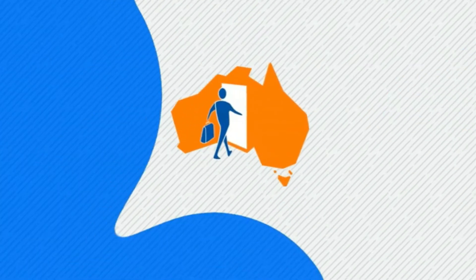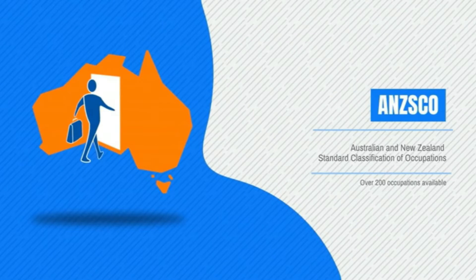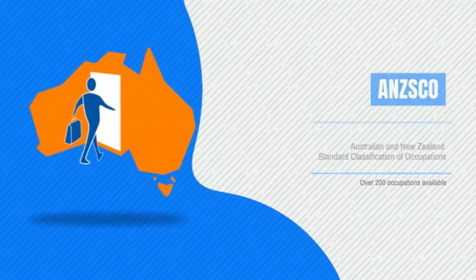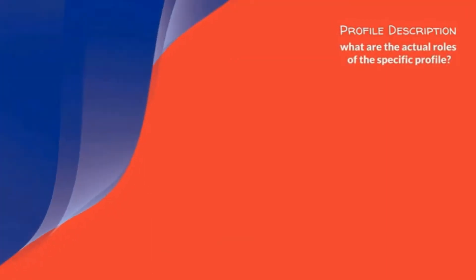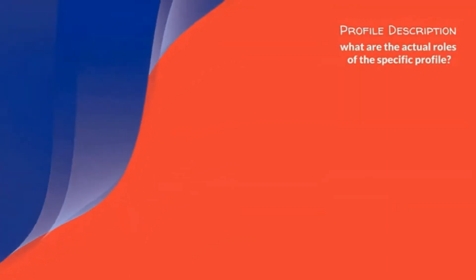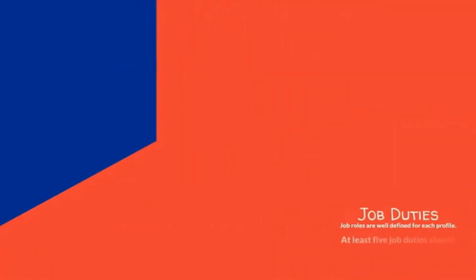You may wonder how to find your category. It's simple — you just need to find your Australian and New Zealand Standard Classification of Occupations code, abbreviated as ANZSCO. It is available for over 200 occupations. When you find this code, you get all the important information related to your profile, including a description of your profile, your actual roles, and job duties. For writing your CDR, at least five job duties should be covered.